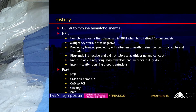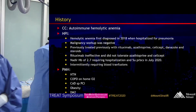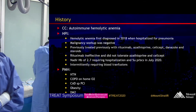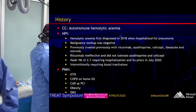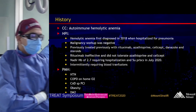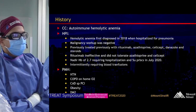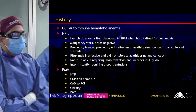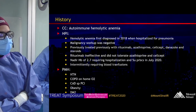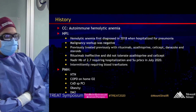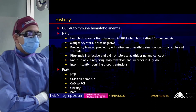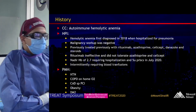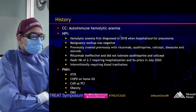He's received multiple different medical therapies: initially treated with rituximab, azathioprine, CellCept, danazol, and steroids. The rituximab was ineffective and was stopped, as was the azathioprine and CellCept. He developed leukopenia. During the past two years, he's had multiple hospitalizations requiring transfusions.